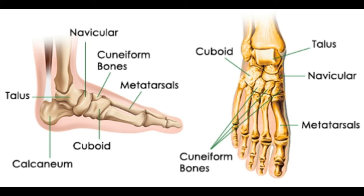Tarsal bones. The tarsal bones in the foot are located among the tibia, tarsal bones, and fibula. There are in all seven bones which fall under the tarsal bones category. They are: calcaneus — to explain the term in layman's language, it is the heel bone.